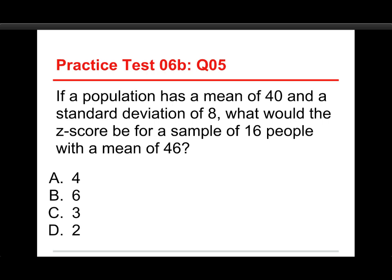If a population has a mean of 40 and a standard deviation of 8, what would be the z-score for a sample of 16 people with a mean of 46? The choices are 4, 6, 3, and 2.